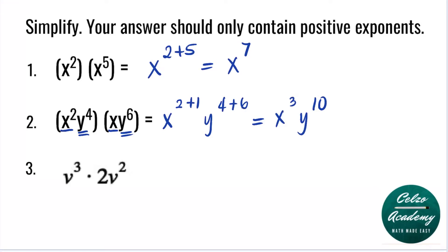Question number three. The first thing we need to do is multiply the numerical coefficients. The numerical coefficient of v cubed is 1, since v cubed is the same as 1v cubed. For 2v squared, the numerical coefficient is 2. Multiplying 1 and 2 gives 2. Now using the product rule for v cubed times v squared, we keep the base v and add the powers 3 and 2. So the answer is 2v to the fifth power.